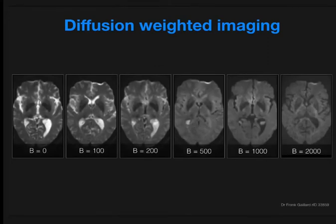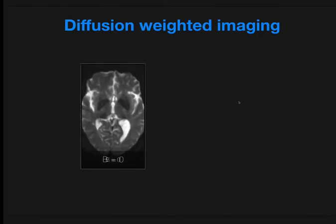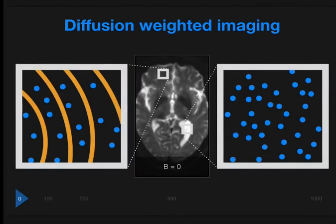A normal brain was scanned at multiple B values, ranging from B0 to B2000. Most centers perform B1000 in the brain, and this is the DWI image we're mostly familiar with. There is a smooth gradation across signal intensity. Concentrating on CSF, it remains bright until about a B value of 500, at which point it's isointense, and then becomes progressively darker. In contrast, white matter remains essentially the same signal intensity regardless of B value.